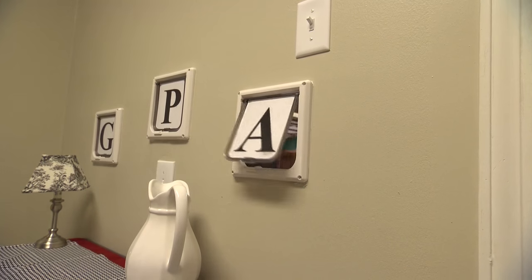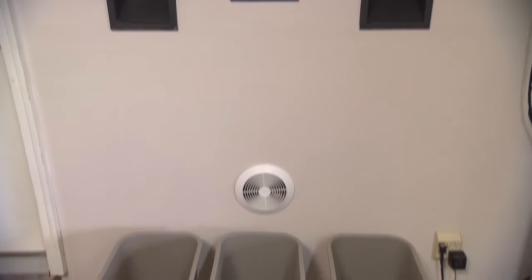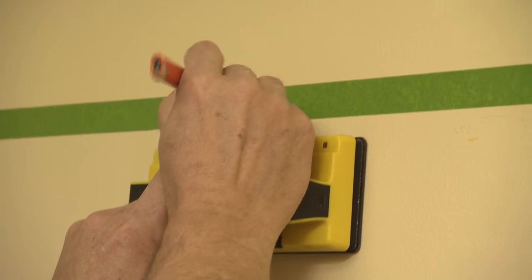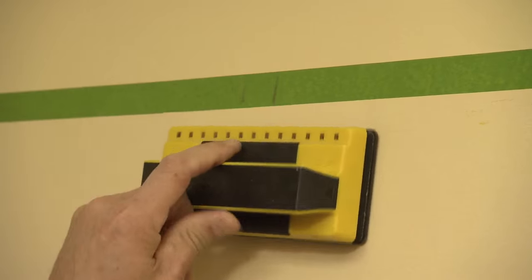Creating through-the-wall chutes for sorting and storing recyclables is a great way to reduce indoor clutter. Begin by locating and marking the studs inside the wall with a stud finder.